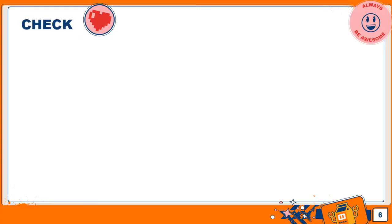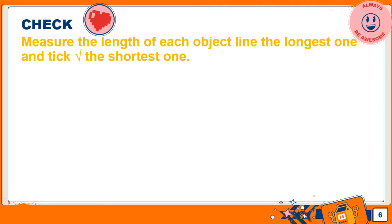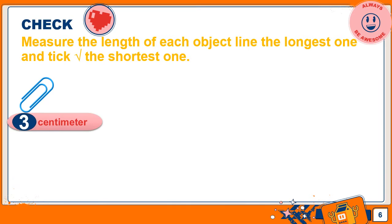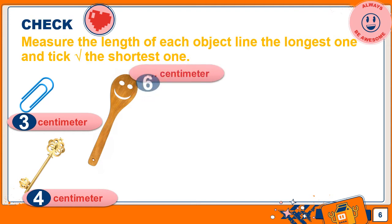Let's read the question: measure the length of each object, underline the longest one and tick the shortest one. This paper clip measures 3 cm. This key measures 4 cm. This wooden spoon measures 6 cm.